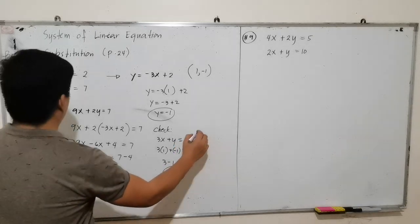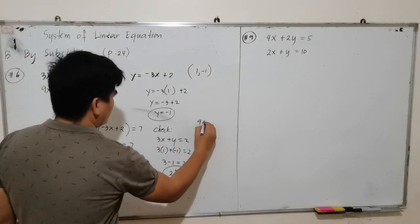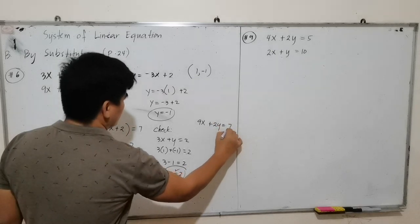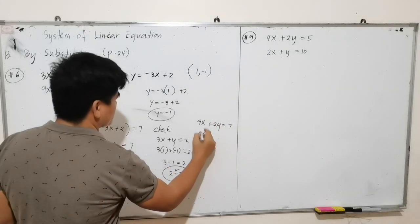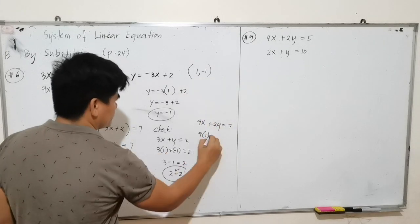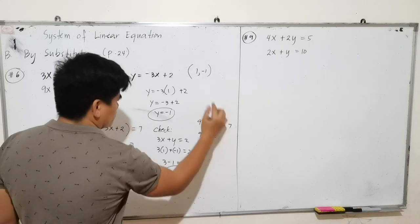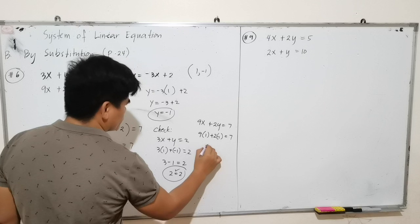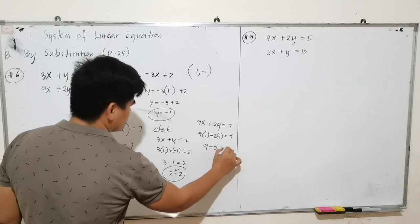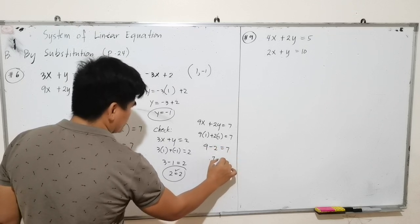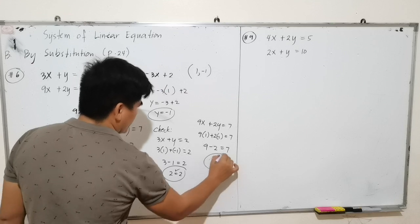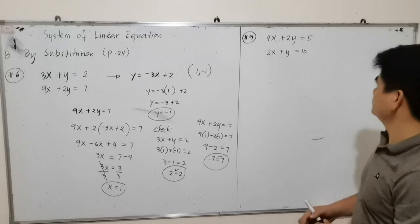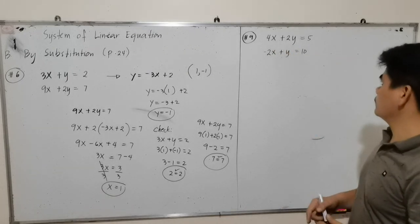Checking the second equation: 9x plus 2y equals 7. Substituting x equals 1 and y equals negative 1: 9 times 1 plus 2 times negative 1 equals 9 minus 2 equals 7. Therefore, 7 equals 7. ✓ Let's proceed to number 9.